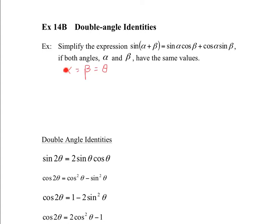So according to this, if I replace theta for both of those, I would get sine of theta plus theta equals sine theta cos theta plus cos theta sine theta. And if you look closely, this cos theta times sine theta is the same on both. So technically, this gives us two times sine theta cos theta. That is the property of double angle identities — if the two angles are the same and you add them together, you can produce a new formula from the sum formulas.